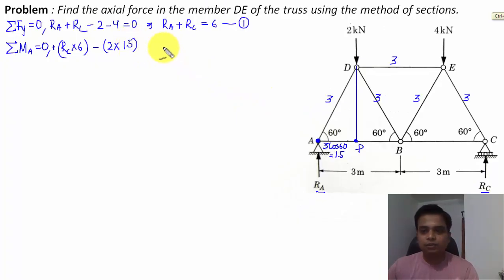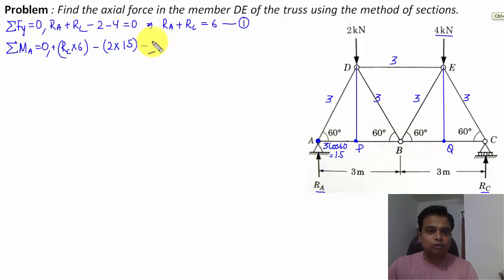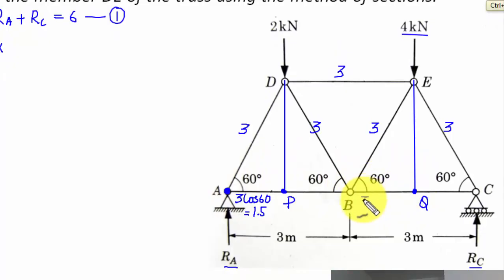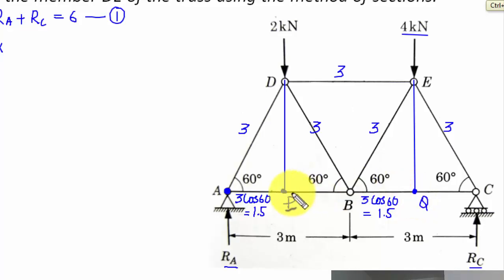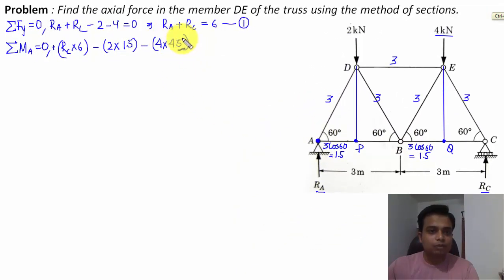Now for the 4 kN force: we drop a perpendicular from point A to get distance AQ. AQ equals AB plus BQ, where BQ equals 3 cos 60° = 1.5 m, and AB is 3 m. So AQ = 3 + 1.5 = 4.5 m. The 4 kN force produces a clockwise moment at A, so the term is minus 4 times 4.5. All of this equals zero.